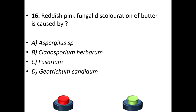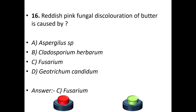Sixteenth question: reddish-pink fungal discoloration of butter is caused by A: Aspergillus species. B: Cladosporium herbarum. C: Fusarium. D: Geotrichum candidum. The answer is C — Fusarium.